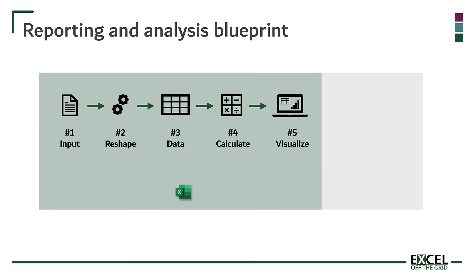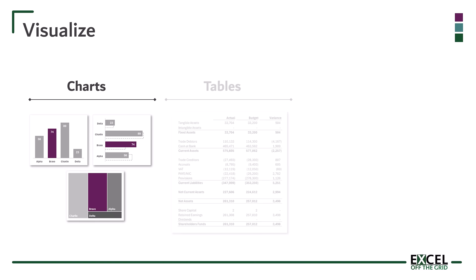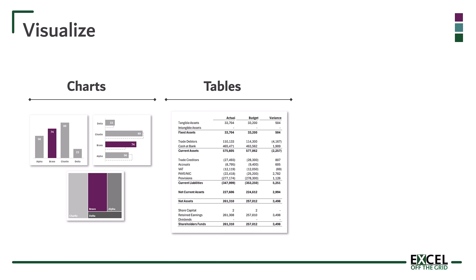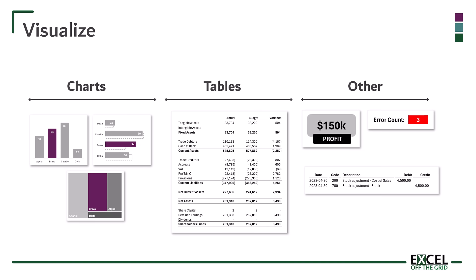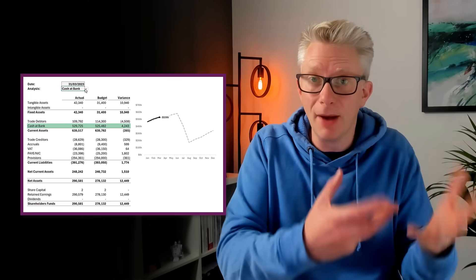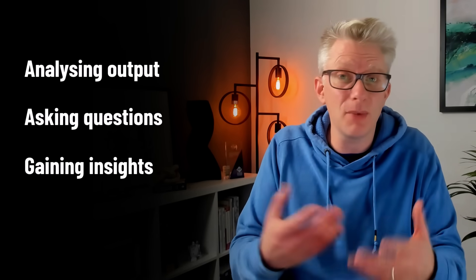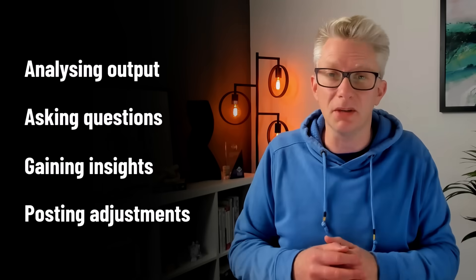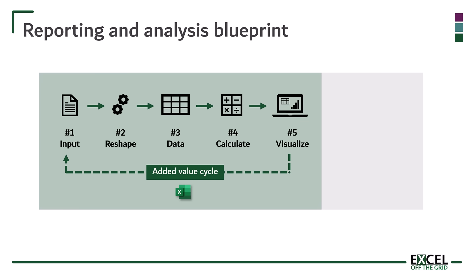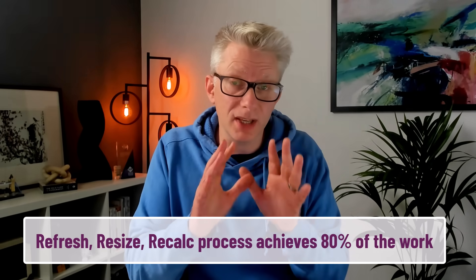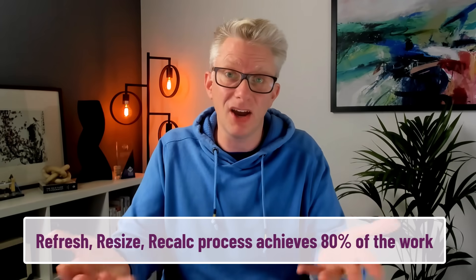We've looked at the first four steps going backwards. Now let's move forwards and look at step five, which is visualize. This is merely creating the individual elements that we want to see for the output. This could be creating charts or tabular layouts such as balance sheets or profit and loss accounts. It could even be creating journals or invoices. We can set these up to be fully dynamic, so that when our calculations update, all of our outputs update too. Once we get to step five, this is where we can add value because we can start analyzing the output, asking questions, gaining insight, and we might even need to post adjustments back to that source system. But that's not a problem because these five steps form the refresh, resize, and recalc process. This is 80% of the work that we can achieve simply by saving a file with a sensible file name in the right location and then clicking Data, Refresh All inside Excel.